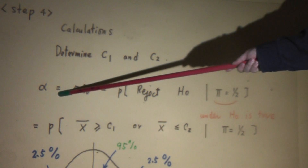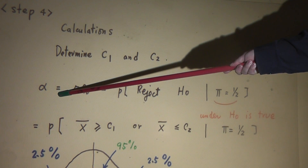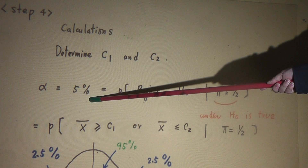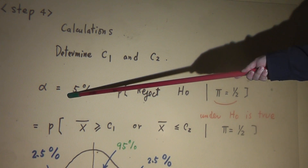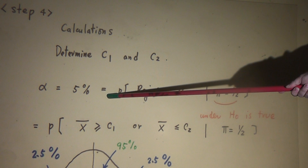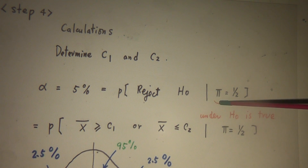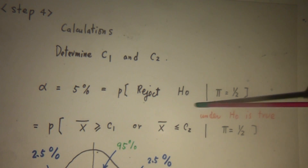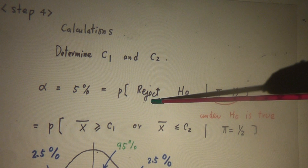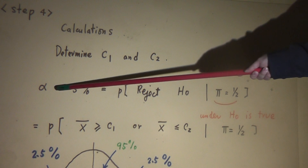Begin with the level of significance. Alpha equals 5%. This is what we chose in the second stage. And by definition, alpha is a probability of making a type 1 error. Under the assumption that H0 is true, but we reject H0 — this is the type 1 error. The probability of type 1 error is alpha.